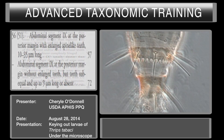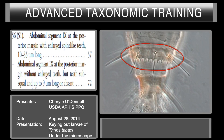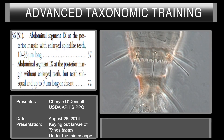We have moved to couplet number 56. This couplet asks about abdominal segment number 9 and the posterior margin with enlarged spine-like teeth, as shown in figure 117. We do not have that character here. The alternative is abdominal segment 9 at the posterior margin without enlarged teeth, with teeth sub-equal and up to 9 microns long or absent. These teeth are relatively equal in size and not overly large compared to figure 117. That takes us to couplet number 72.